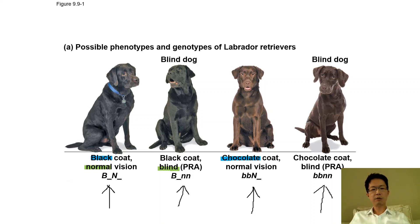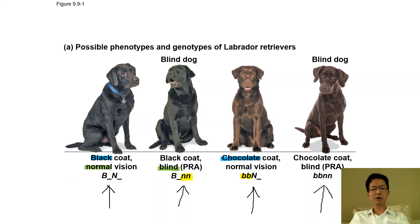Getting one trait does not mean you will have the other trait. Black coat and normal vision are both dominant phenotypes. A dog is blind only when it is homozygous recessive for the vision gene, and chocolate-colored only when it is homozygous recessive (small b, small b) for the coat gene. The chocolate blind dog has homozygous recessive alleles in both traits.